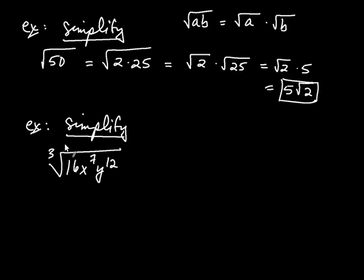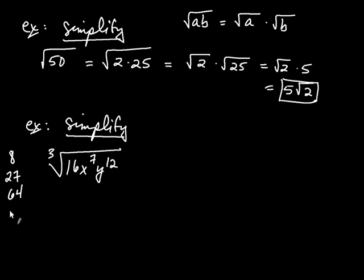Let's try another one using variables. When I look at this, the first thing I notice is that the index is 3, so I'm no longer thinking about perfect squares — I'm thinking about perfect cubes. Perfect cubes are like 8, because 8 is 2 cubed; or 27, which is 3 cubed; or 64, which is 4 cubed; or 125, which is 5 cubed. The index guides your thinking about what perfect powers you're looking for.